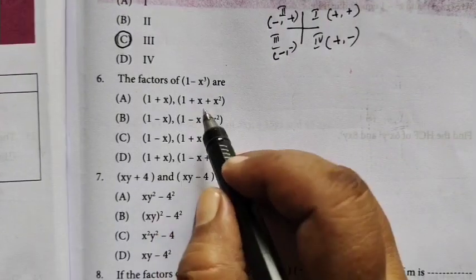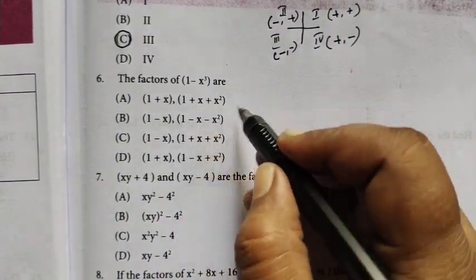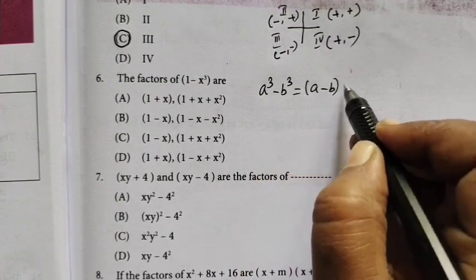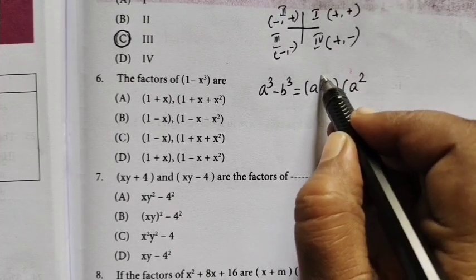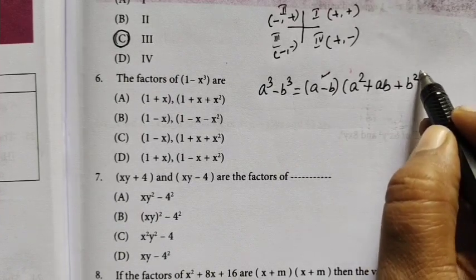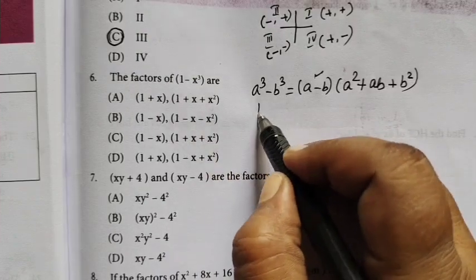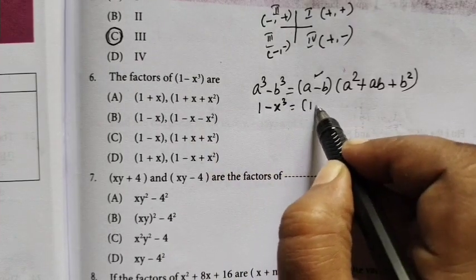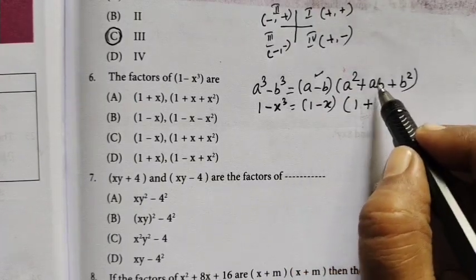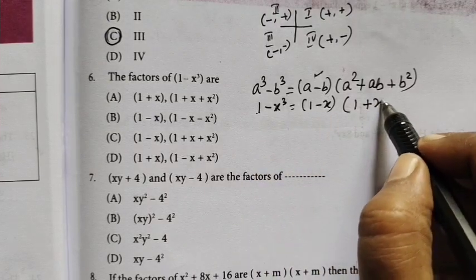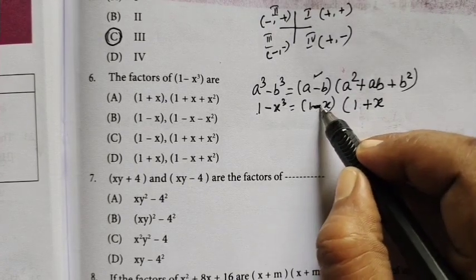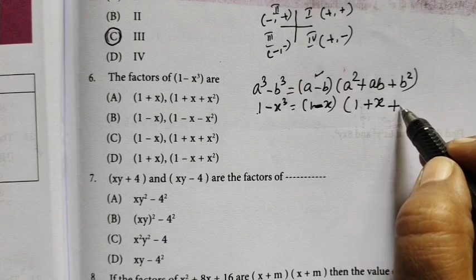The factors of 1 minus x cubed are a cubed minus b cubed formula, a minus b, a squared plus ab plus b squared. So let's compare to 1 minus x. 1 squared is 1. Then plus a minus b. This is x.